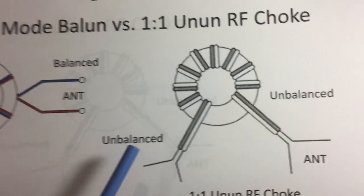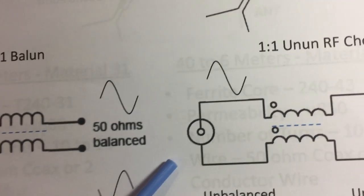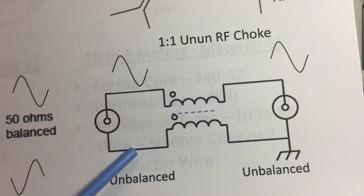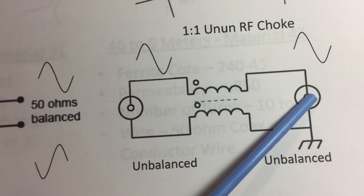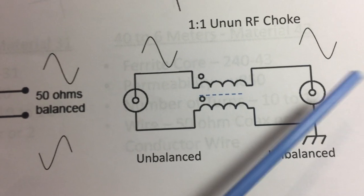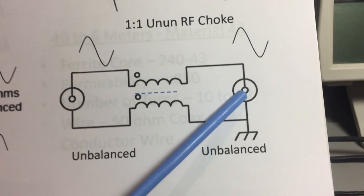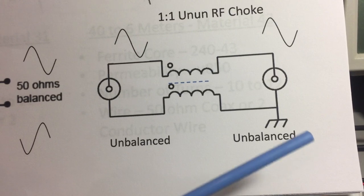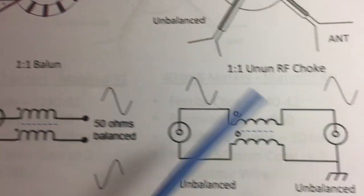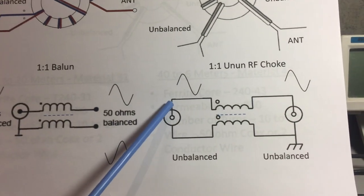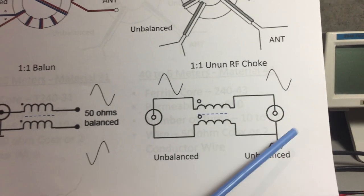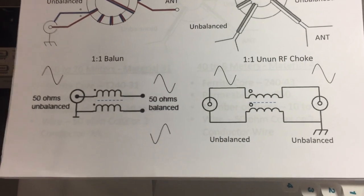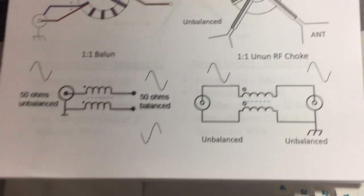The un-un is unbalanced to unbalanced. We have unbalanced from our transceiver and unbalanced on this end. Both have a common ground. This would be for an end-fed antenna like the multi-band long wire I'm building, using the coaxial shielding as the counterpoise. That's the primary difference between the balun and the un-un. The un-un is one-to-one.